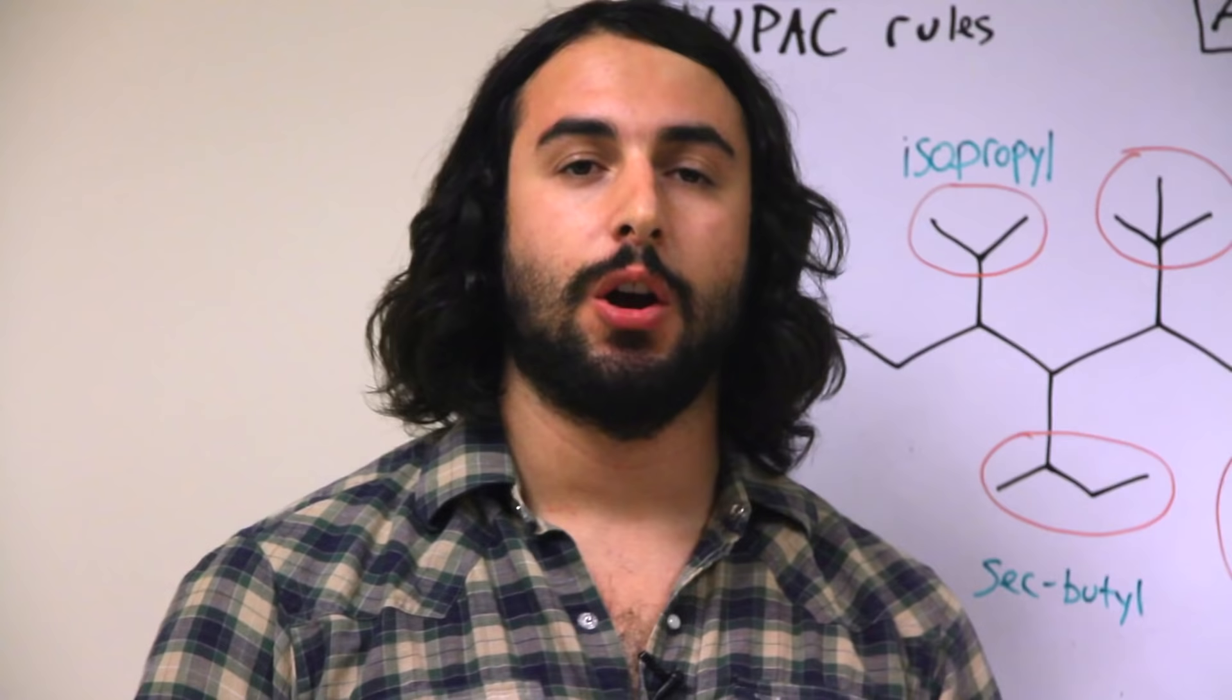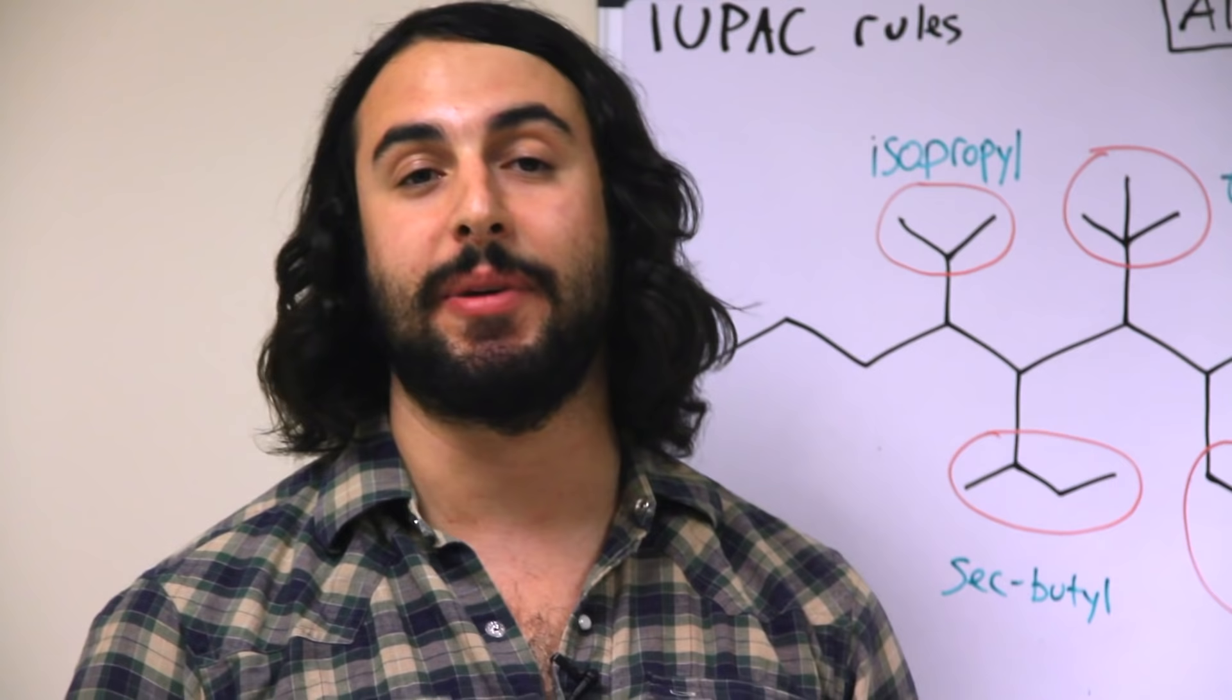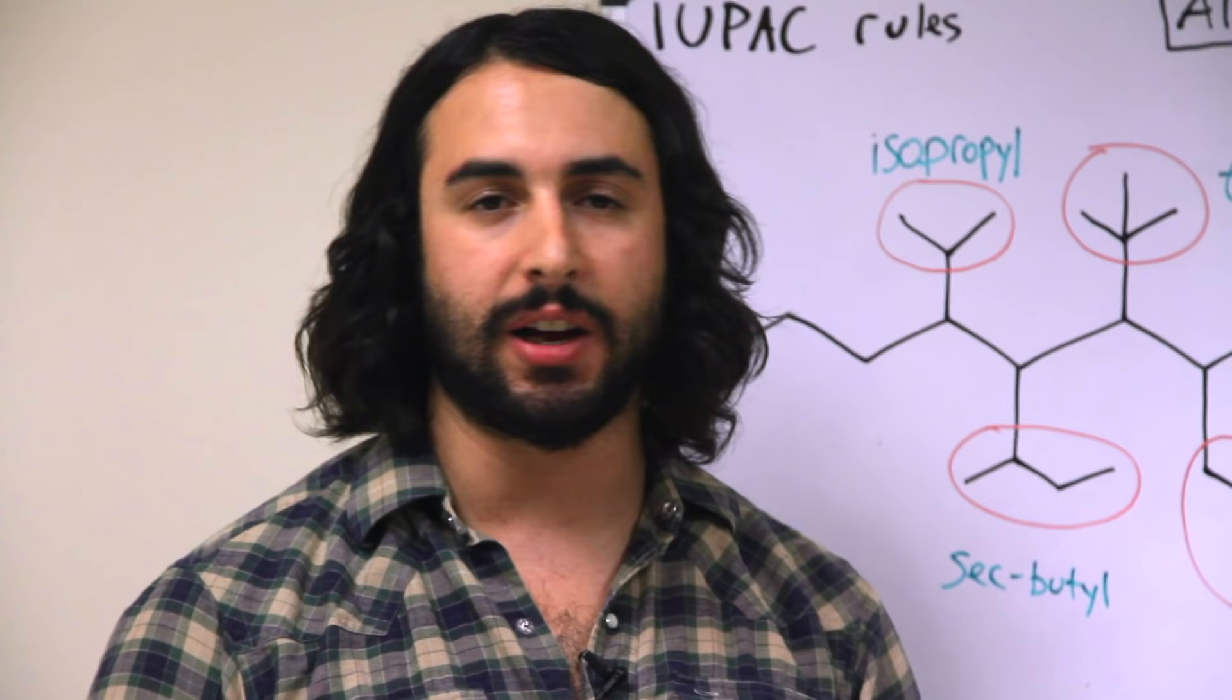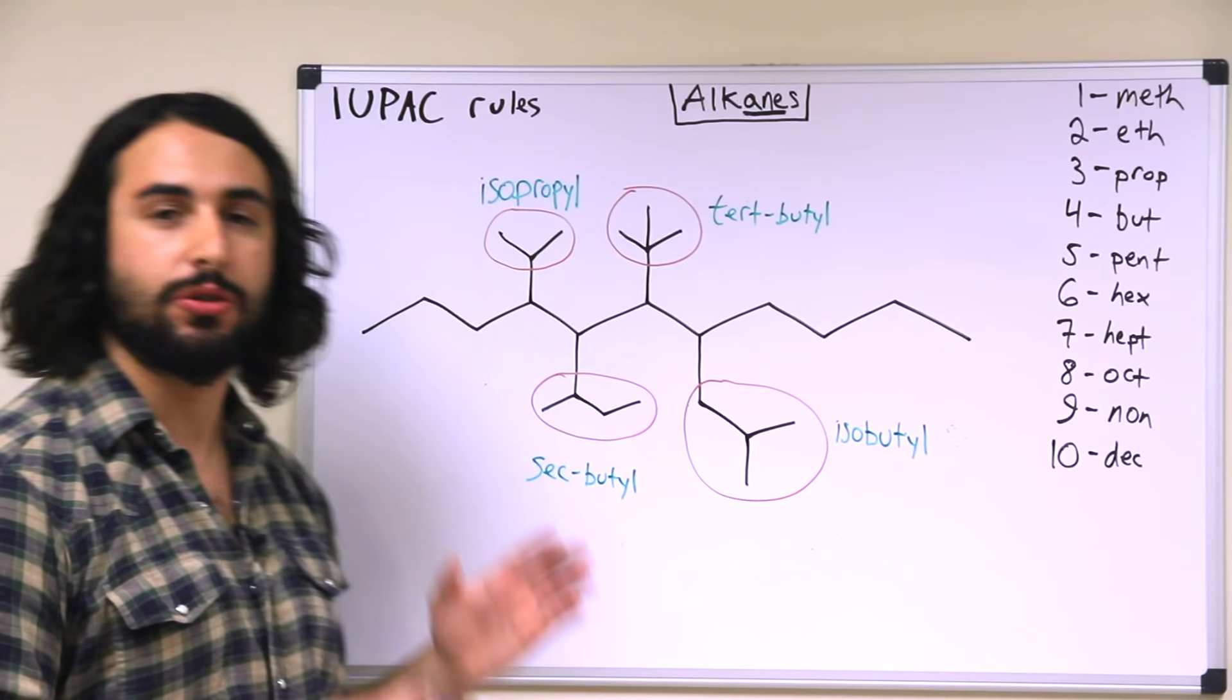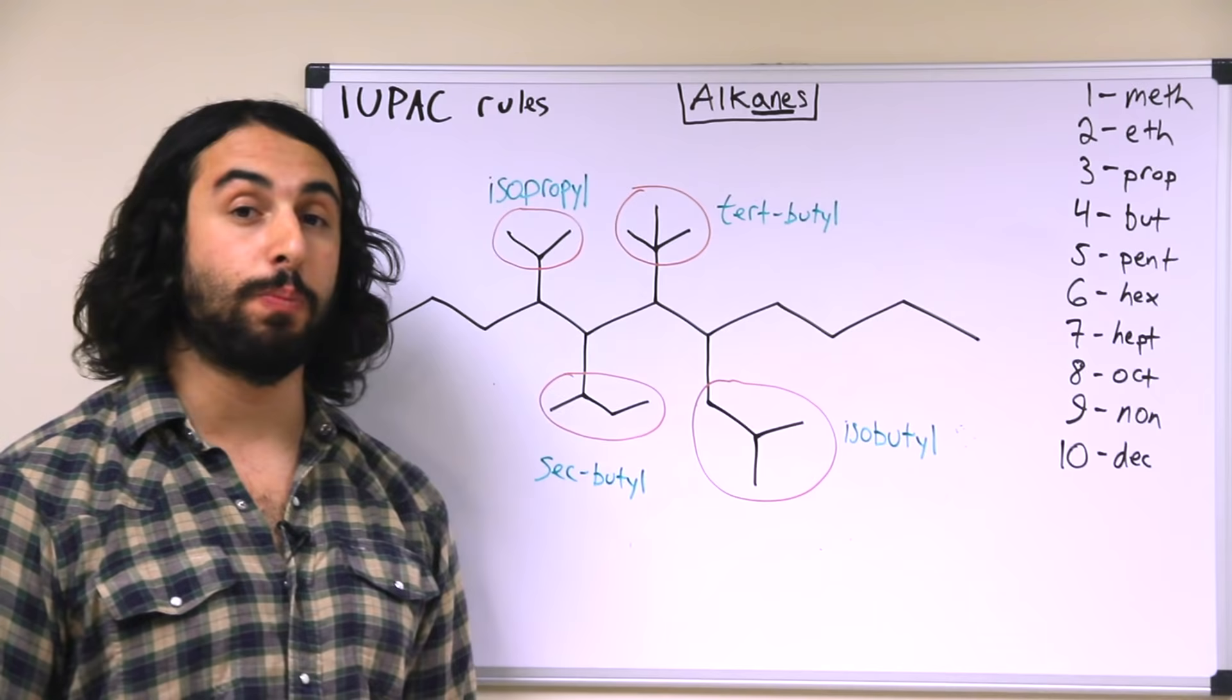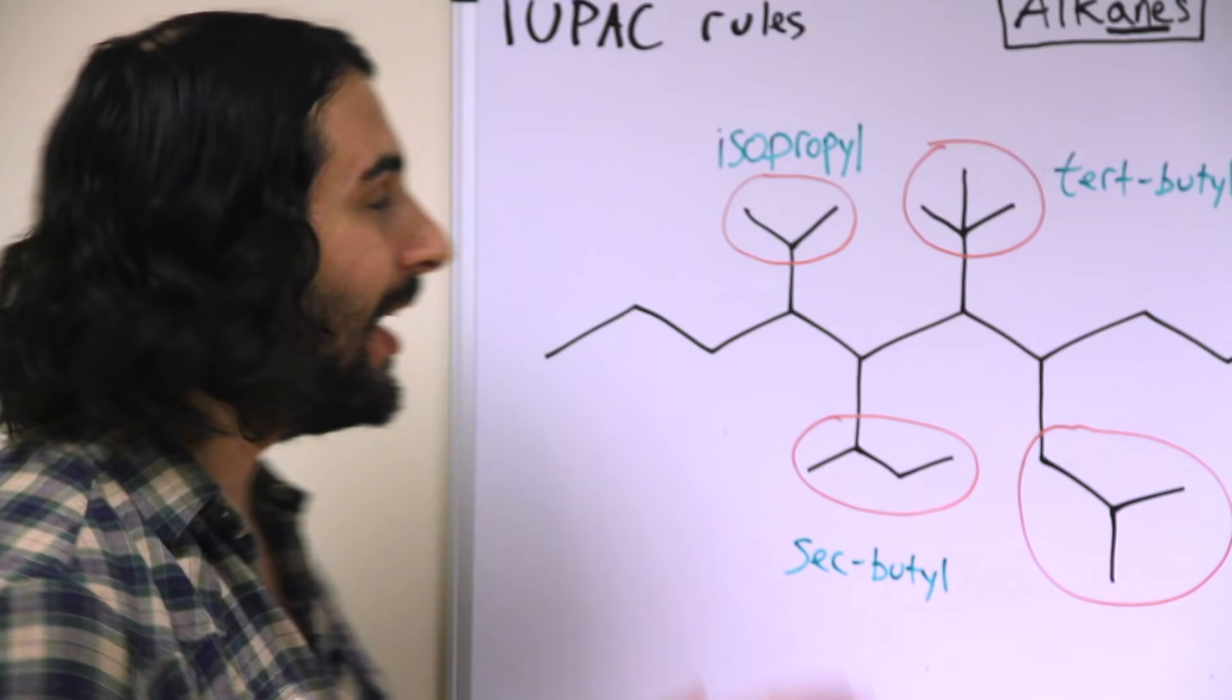Okay, now let's take a look at a couple of groups that have names that are common names. They don't follow IUPAC rules, but we use them so frequently that we're going to need to know how to use them regardless. So don't pay attention to the main molecule; I just drew a molecule to show you these different kinds of substituents. This first one is an isopropyl group, so it's a three carbon alkyl substituent.